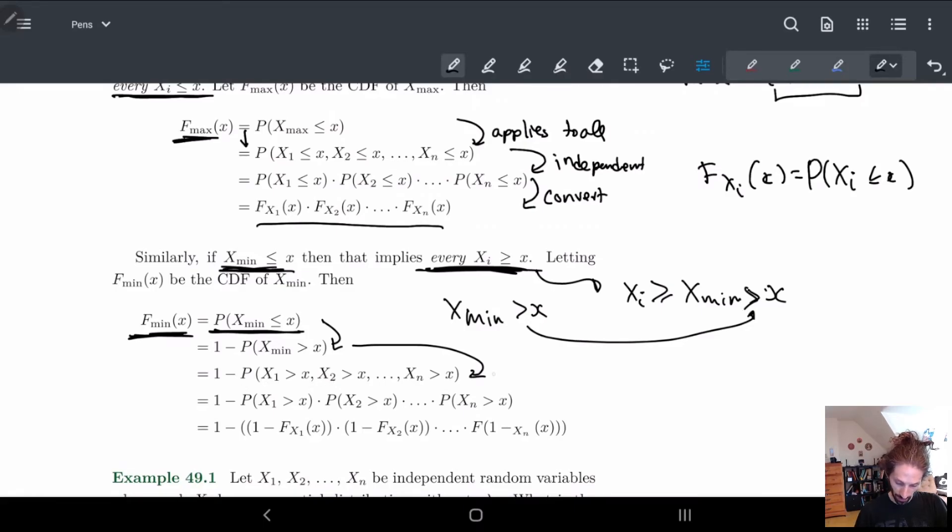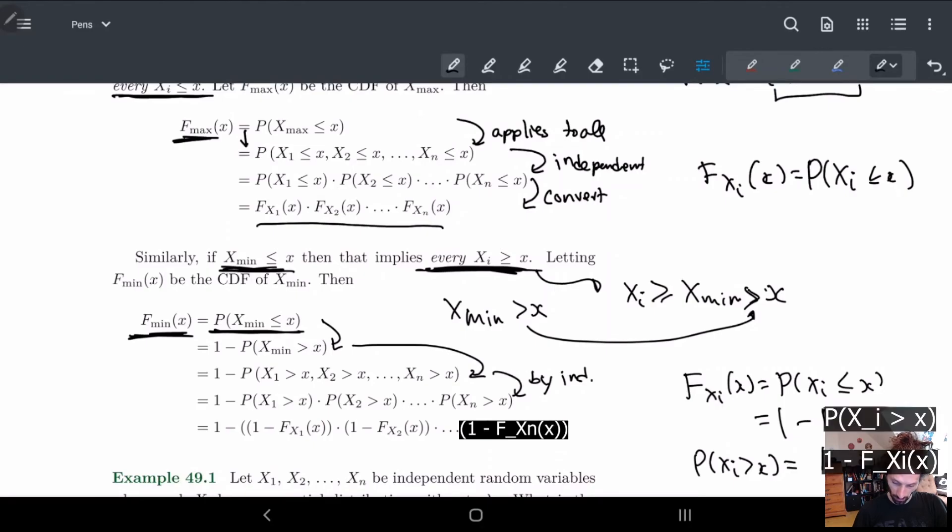Now these, again, by independence, we can split them up. And each one of these is also equal to their opposite. So Fxi of x is equal to P of xi less than or equal to x, which is just one minus P of xi greater than x. So in other words, P of xi greater than x is equal to one minus F of xi of x.